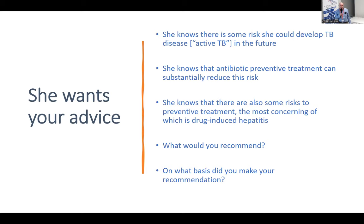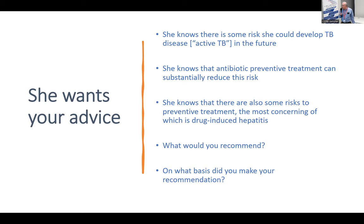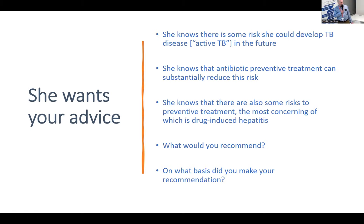She wants your advice as a provider. She recognizes that if the test is correct, there's some risk she could develop active TB in the future. She knows that antibiotic preventive treatment could substantially reduce that risk, but she also recognizes there are well-known risks of treatment — likely the most concerning being drug-induced hepatitis. So the question is: what would you recommend, and on what basis? Any suggestions from the audience?